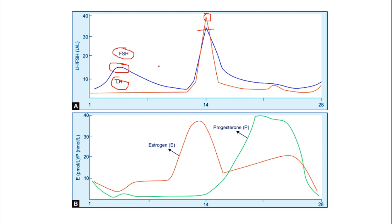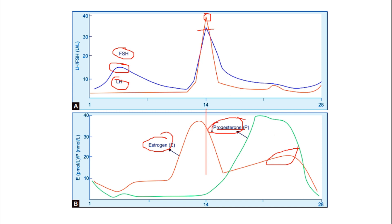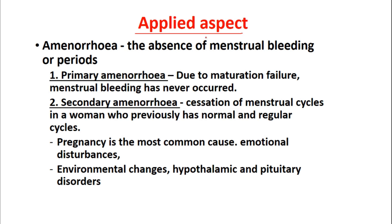In the post-ovulatory or luteal phase, FSH and LH levels continuously reduce back to normal. Just before ovulation, the estrogen level increases, managing the pre-ovulatory phase of the ovarian cycle and the proliferative phase of the endometrial cycle. After ovulation, there is a sharp decline in estrogen and a sharp gradual increase in progesterone. The post-ovulatory or secretory phase is mainly managed by progesterone, though estrogen always has some effect.